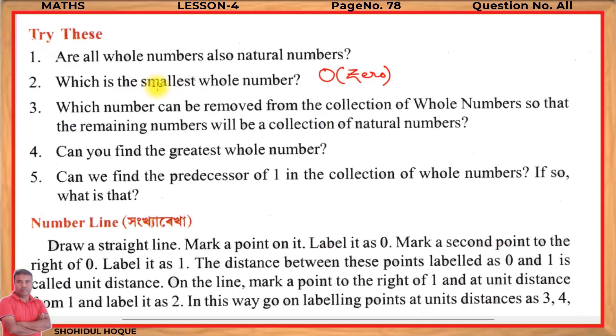Question number 2: Which is the smallest whole number? The answer is 0. Zero is the smallest whole number.